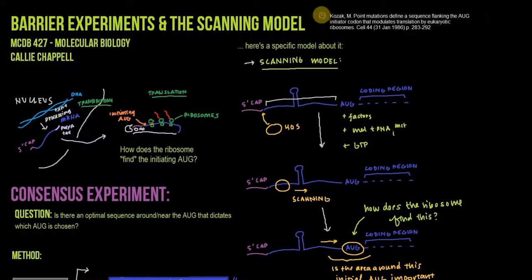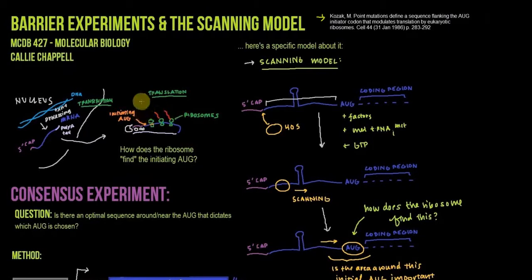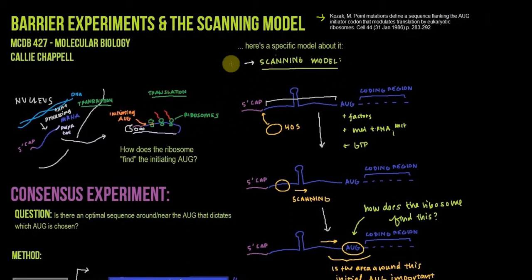These experiments done by Marilyn Kozak are really interesting about explaining how that happened. First, they noticed that initiation of translation always starts with the first AUG, and rarely starts with internal AUGs. They also noticed that when translation begins, that AUG is not some fixed distance from the 5' cap. So it seems to be something else — maybe something to do with the sequence surrounding that AUG.